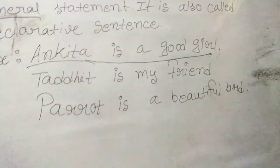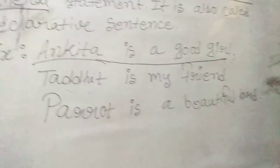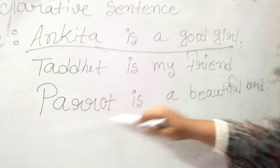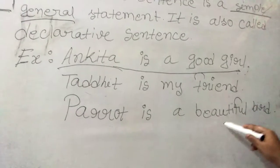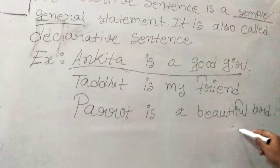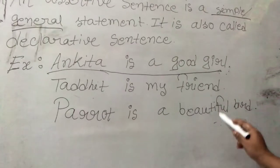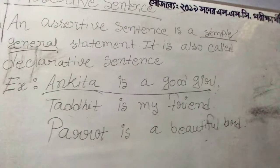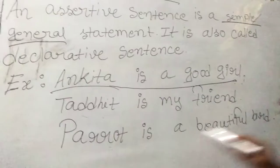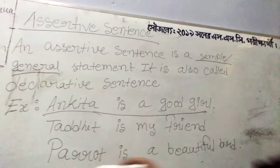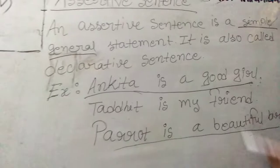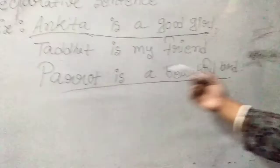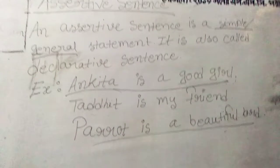The third example: 'Parrot is a beautiful bird.' Have you ever seen a parrot? The very pure greenish colored bird is a parrot. Isn't a parrot a beautiful bird? Yes, it is true that parrot is a beautiful bird. And one more thing — a parrot can also speak like a human being if it learns to speak. So 'Parrot is a beautiful bird' — can we declare such a sentence as an assertive sentence? Yes. So: Ankita is a good girl, Toddit is my friend, Parrot is a beautiful bird — these simple sentences are assertive sentences.